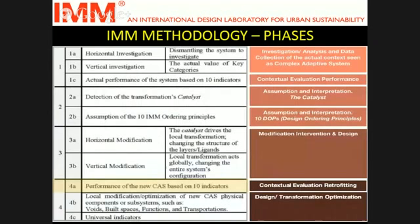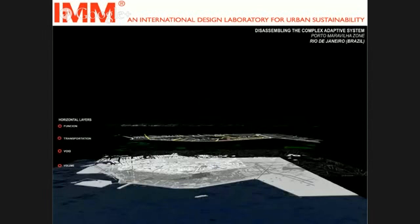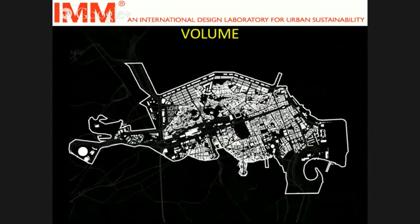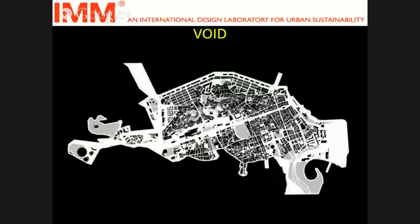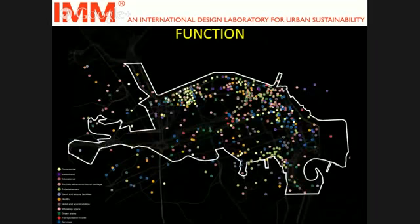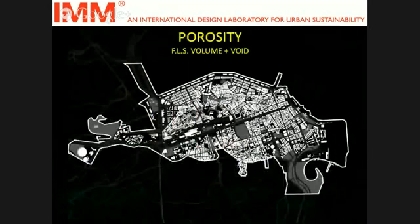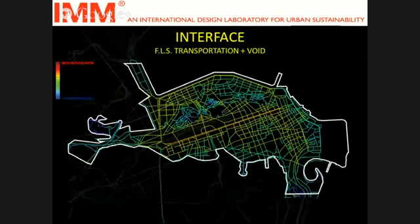In the last phase, we evaluated the Transformator-suggested context to see what we had done. Again, we dismantled the system into volume, voids, transportation, and functions. You can see more concentration of function in the eastern part this time. We also performed the vertical analysis — porosity, proximity, and interface — and you can see warmer colors now, as well as effectiveness.